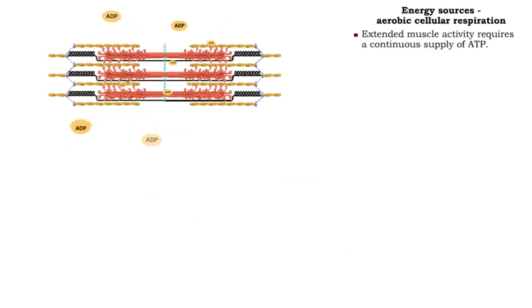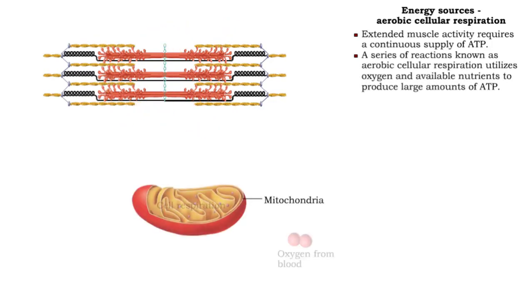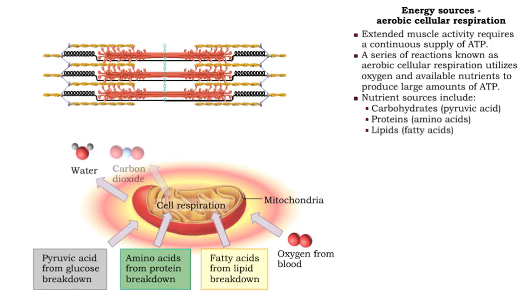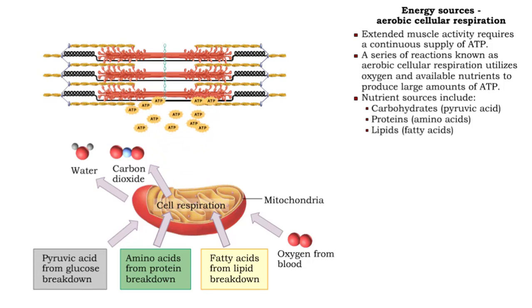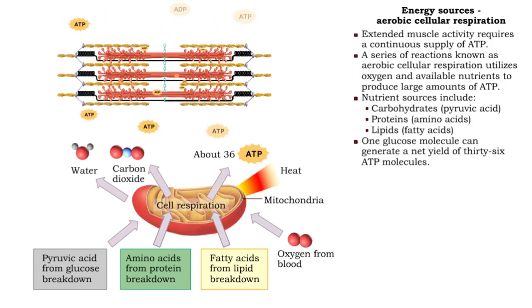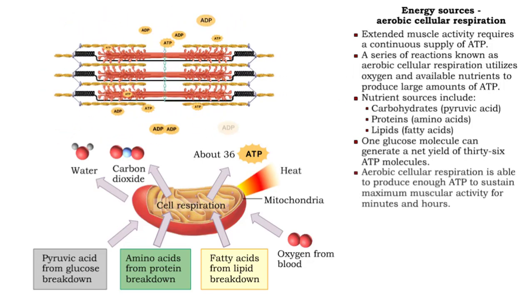To sustain muscle activity for minutes or hours, muscle cells require a continuous supply of ATP. Aerobic cellular respiration, a series of reactions that require nutrients and oxygen, can provide such a supply. The reactions utilize the breakdown of pyruvic acid and other carbohydrates, proteins, and fatty acids. The result is water, carbon dioxide, and a great amount of ATP. One glucose molecule can generate a net yield of about 36 ATP molecules. Aerobic cellular respiration is able to produce enough ATP to sustain maximum muscle activity for hours.